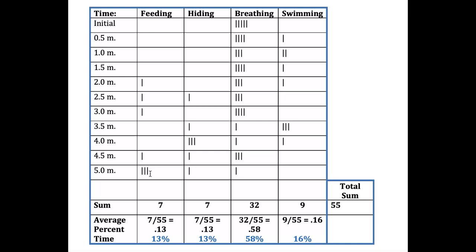Next, add up all the observations. I had seven observations for feeding, so I put seven here. Same thing for hiding — seven observations. Adding all the sums together: seven plus seven plus 32 plus nine gives me 55 total observations.